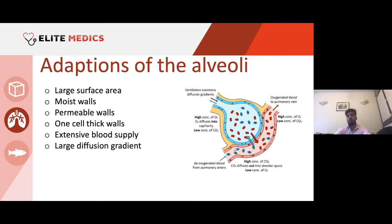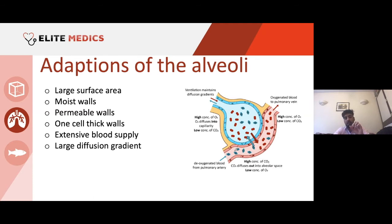Alveoli have a large surface area. You might think these are small little gas sacs — how can they have a large surface area? Individually they are very small, giving a large surface area to volume ratio. But we have millions of alveoli in our lungs. So the combined surface area is significantly increased — if each alveolus has a surface area to volume ratio of 6:1, and we have a million of them, we now have six million times the surface area to volume ratio.